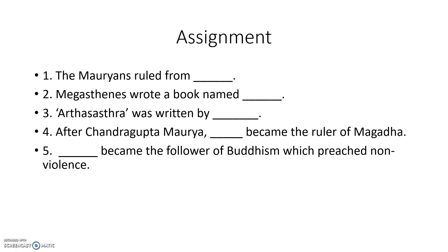In the next video, we will discuss Ashoka in detail, along with the Gupta Dynasty and South Indian dynasties. Now, here is a small assignment for you: The Mauryans ruled from ___. Megasthenes wrote a book named ___. Arthashastra was written by ___. After Chandragupta Maurya, ___ became the ruler of Magadha. ___ became the follower of Buddhism which preached non-violence. Thank you, children.